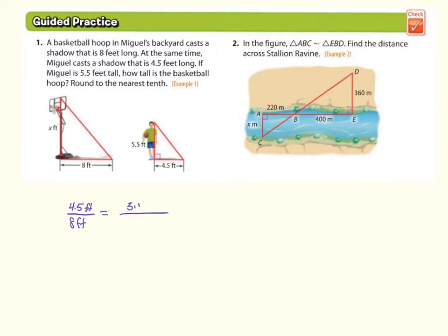The height is 5.5 feet for the basketball player, and then the hoop is X. So let's go ahead and cross multiply, 8 times 5.5, and then divide it by 4.5. So we get 44 equals 4.5X, divide, and we get roughly 9.78 feet is the height of the basketball hoop. So that deals with our shadows. Oh, it said round to the nearest tenth, so 9.8 feet.